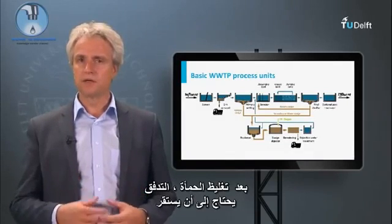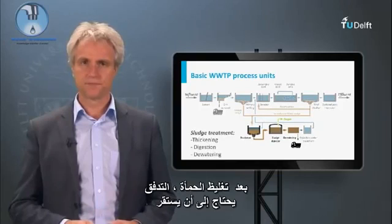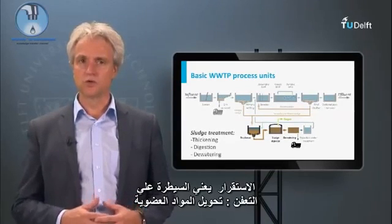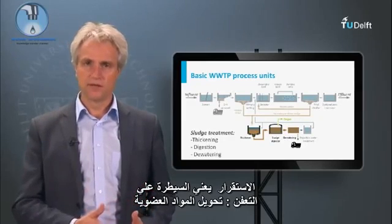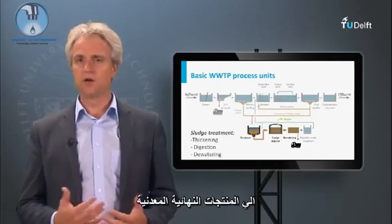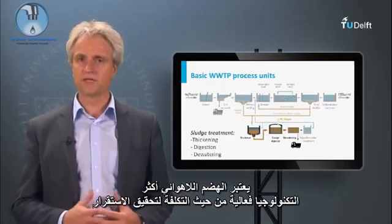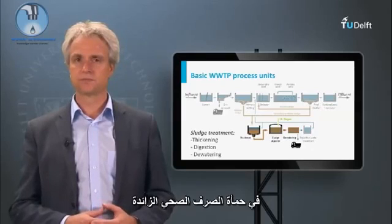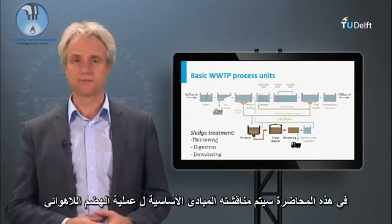After sludge thickening, the concentrated flow needs to be stabilized. Stabilization in this sense means controlled putrefaction — conversion of organic matter into mineralized end products. Anaerobic digestion is considered the most cost-effective technology for stabilizing the excess sewage sludge, and its basic principles will be discussed in this lecture.